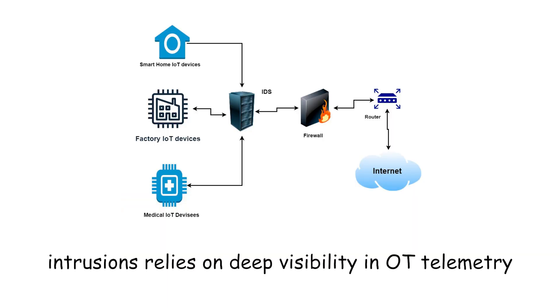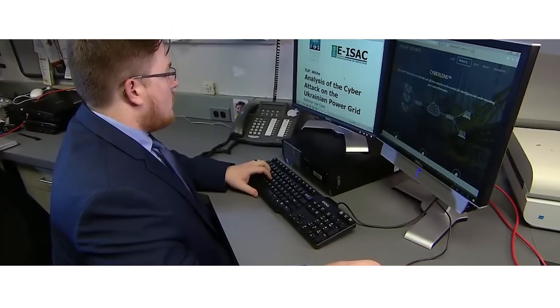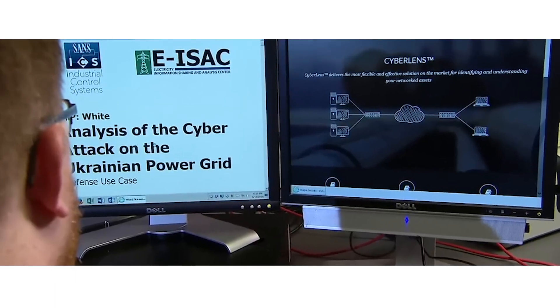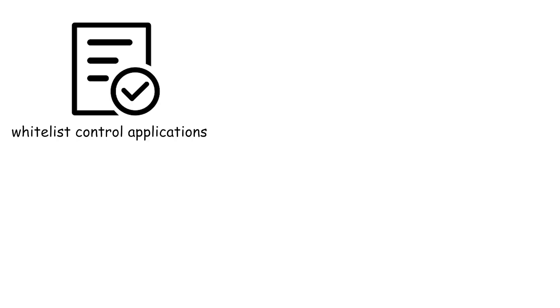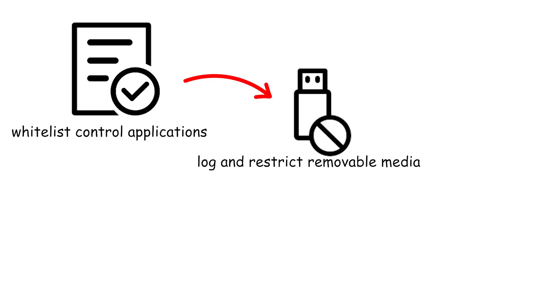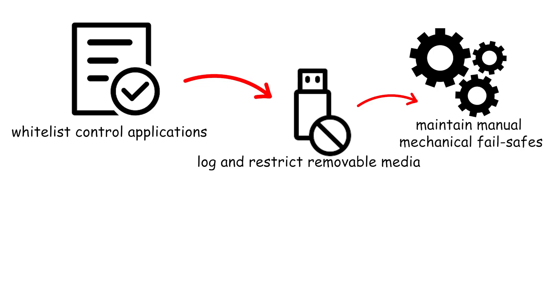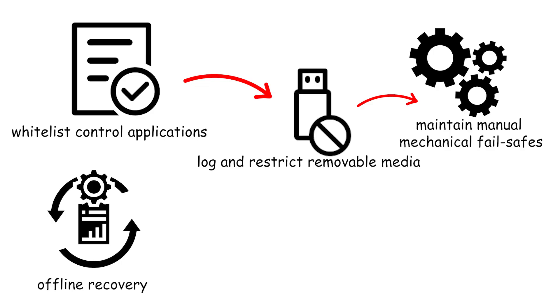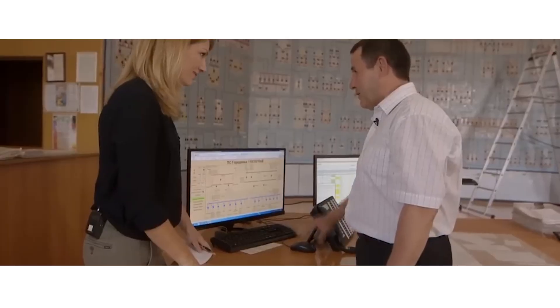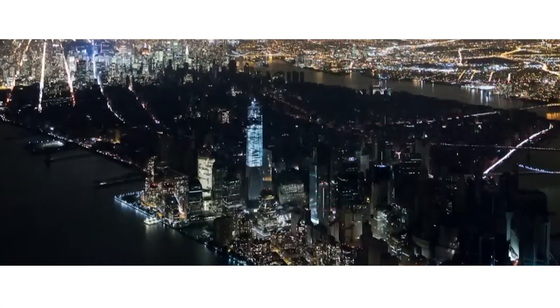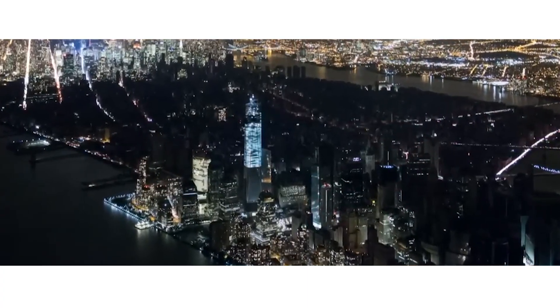Detecting these intrusions relies on deep visibility in OT telemetry, unexpected command sequences, anomalous control setpoints, and unexplained authentication events on control networks. Defenders must enforce strict IT/OT separation, whitelist control applications, log and restrict removable media, maintain manual mechanical fail-safes, and rehearse offline recovery and manual control procedures. In wartime, operators must assume the presence of adversary footholds and operate with conservative defaults and manual overrides to preserve essential services.